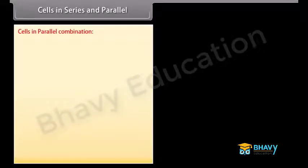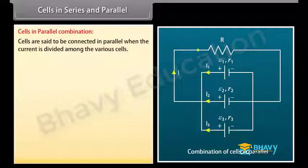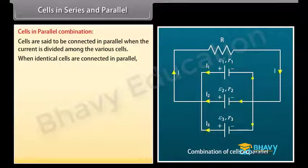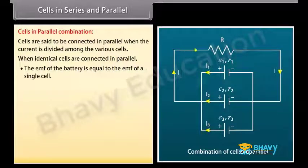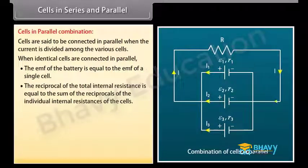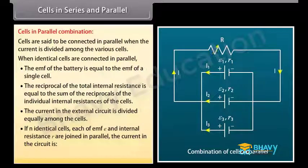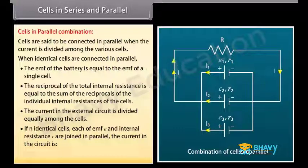Cells in parallel combination: cells are connected so that current is divided among the various cells, with all positive terminals connected together and all negative terminals connected together. The EMF of the battery equals the EMF of a single cell. The reciprocal of total internal resistance equals the sum of the reciprocals of individual internal resistances. If N identical cells, each of EMF E and internal resistance r, are joined in parallel, the current equals NE divided by (Nr plus R).